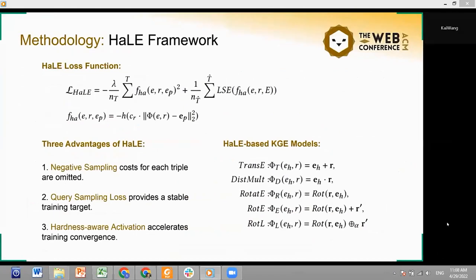Finally, this paper combines the above two techniques into one training strategy called HEAL. The query sampling loss function can provide a stable training target with less computational costs, and the hardness-aware activation function can focus on indistinguishable symbols and ignore those easy symbols, such that training efficiency can be improved and the model convergence is speeded up. Besides, in the paper, we select five typical KGE models to test whether the HEAL framework can handle different types of KGE models.